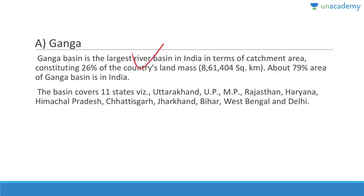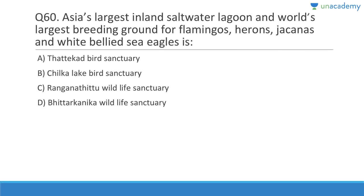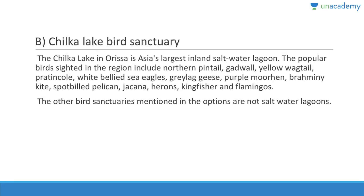The basin covers 11 states: Uttarakhand, Uttar Pradesh, Madhya Pradesh, Rajasthan, Haryana, Himachal Pradesh, Chhattisgarh, Jharkhand, Bihar, West Bengal, and Delhi. Question sixty: Asia's largest inland saltwater lagoon and the world's largest breeding ground for flamingos, herons, and white-bellied sea eagles is located in Odisha — that is Chilika Lake bird sanctuary. Thank you for watching this lesson.